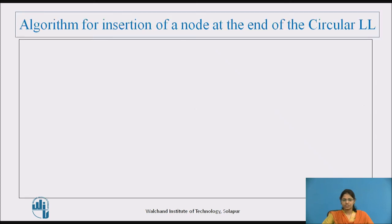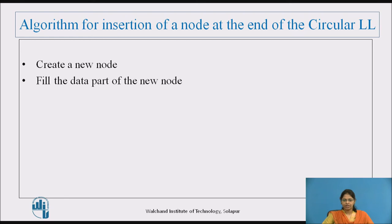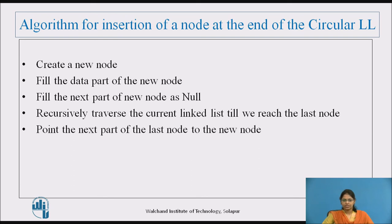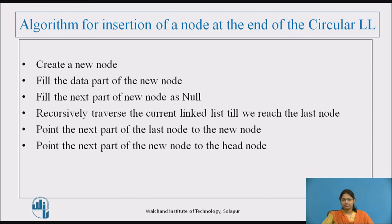Algorithm for insertion of a node at the end of the circular linked list: First, create a new node and fill the data part. Fill the next part of the new node as null. Recursively traverse the current linked list until we reach the last node. Once at the last node, point the next part of the last node to the new node. Then point the next part of the new node to the head node.